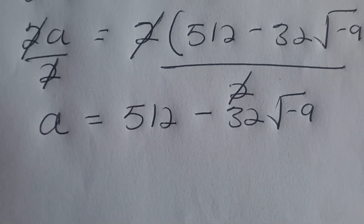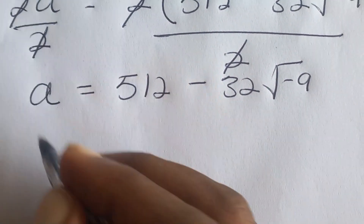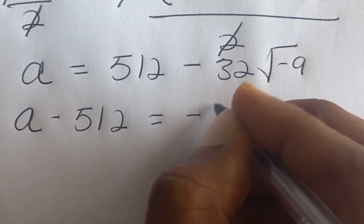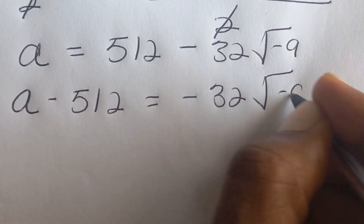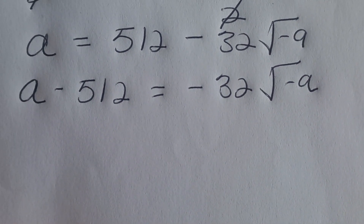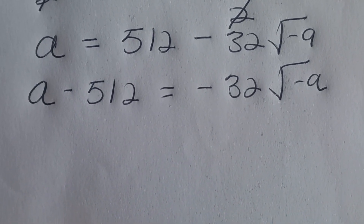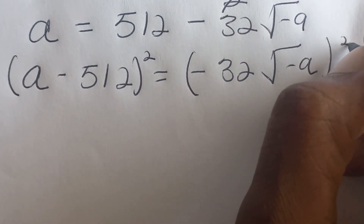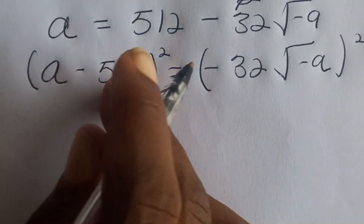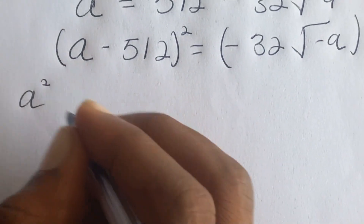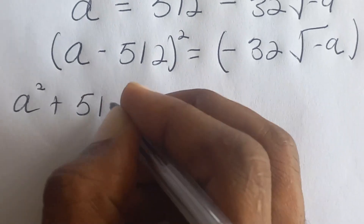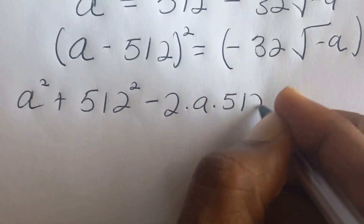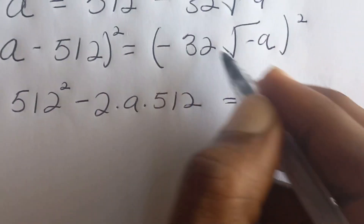From here, moving 512 to the left side, we get a minus 512 is equal to negative 32 square root of negative a. Now let's square both sides of the equation again. Squaring the left side gives a squared minus 2 times a times 512, and on the right side we have negative 32 squared times negative a.